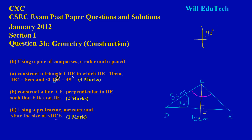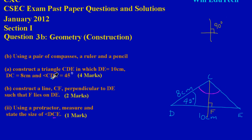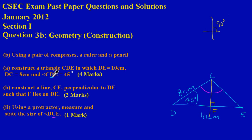Remember, whenever you're given an angle to draw, identify the letter in the middle — here it's D — and that's where the angle is being formed. So the 45-degree angle is formed at point D. After you've constructed that angle, measure from D upward 8 centimeters, label that point C, and then simply use your ruler to connect C to E.